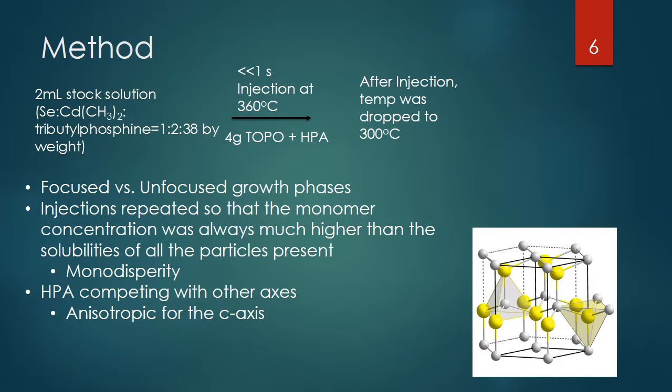Basically they were using HDA as an impurity of the TOPO to ensure that the growth was not happening too fast and that the correct growth was happening. HDA makes the whole reaction a little bit anisotropic for the C-axis, so you get the correct growth on the C-axis to get a rod and not the dot they were previously getting with pure TOPO.